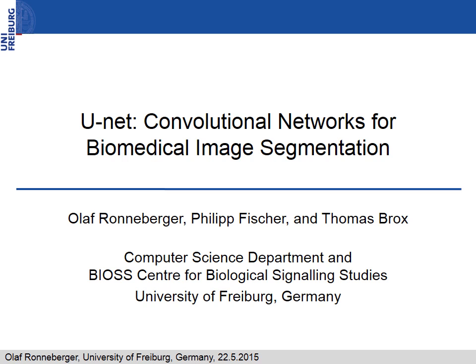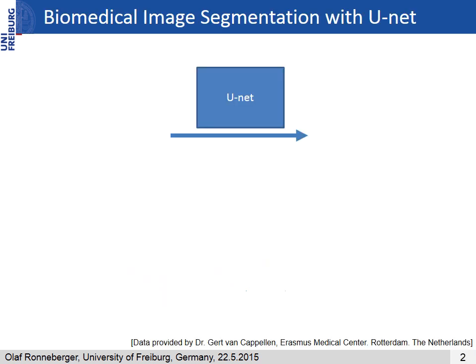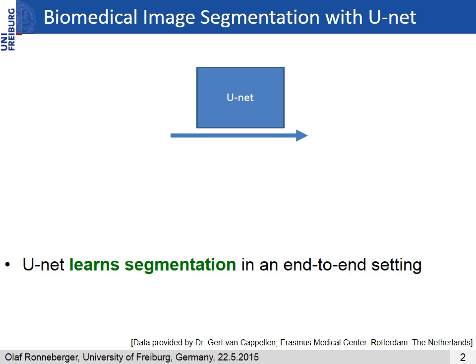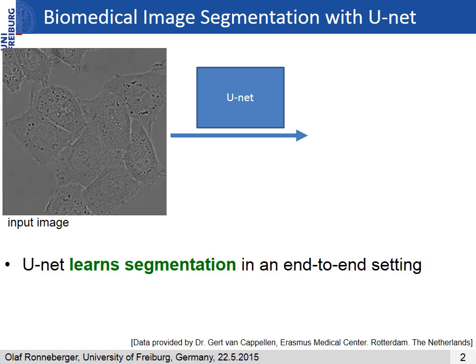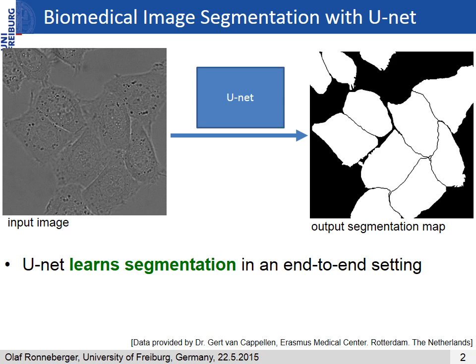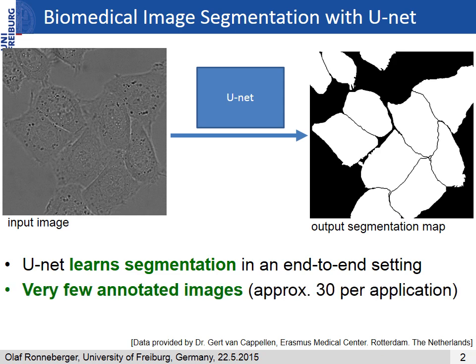Welcome to our presentation. We designed a deep convolutional network for the segmentation of biomedical images, which we called UNET. It learns to segment images in an end-to-end setting, which means a raw image in and a ready segmentation map out. The main challenges were that we had only around 30 annotated images per application, and we nearly always have touching objects of the same class that need to be separated by the segmentation algorithm.